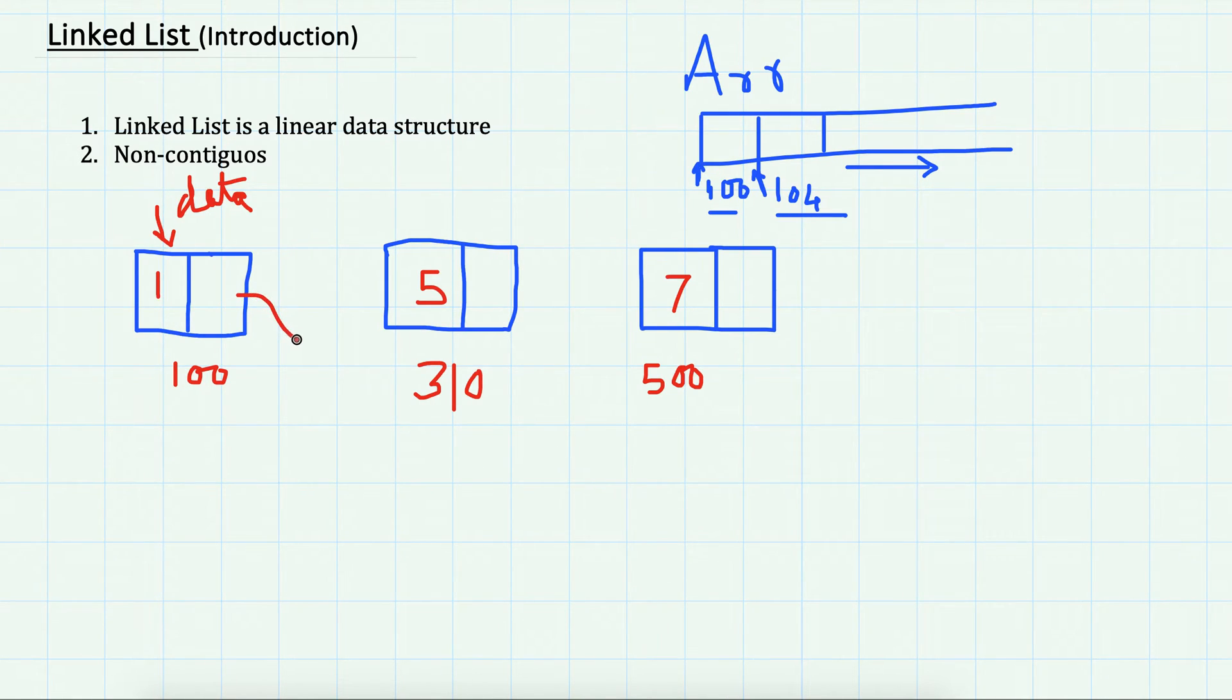stores the address of the next node. So this was at address 100, the second node was at address 310, so this will store 310. Then the next element is stored at address 500.